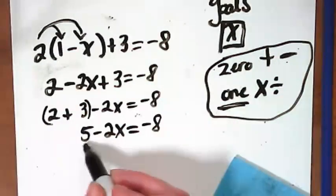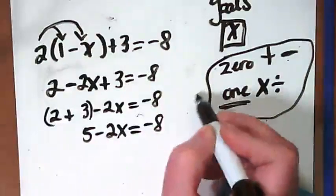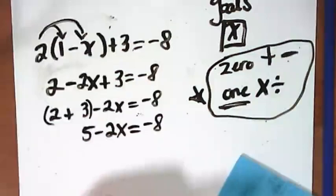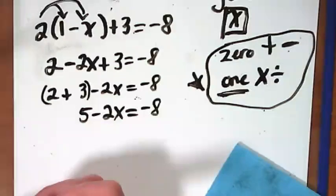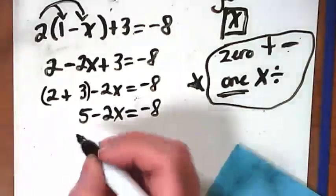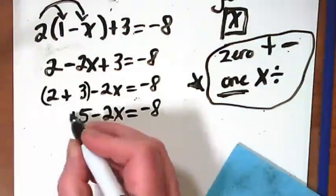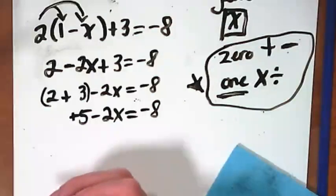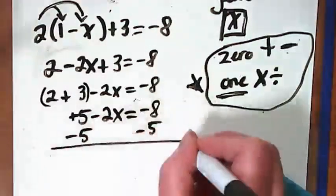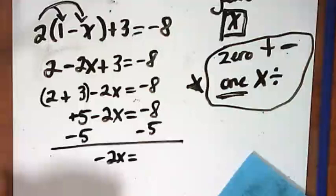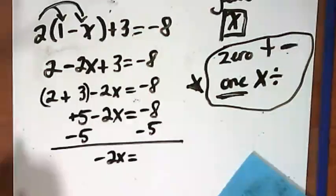Now, I have a whole number, an X term, and a number. Now, I can be thinking about the zero or the one part. First thing we want to do is make a zero if we can. Where do you see that we can do that? The five. It's a positive five. Why do I know that? Because there's nothing in front of it. So we have an invisible plus sign there. That means we're going to do the opposite.